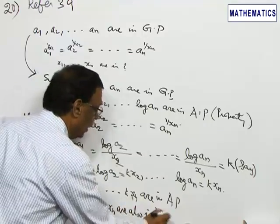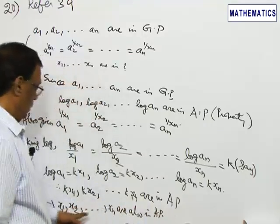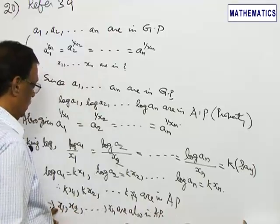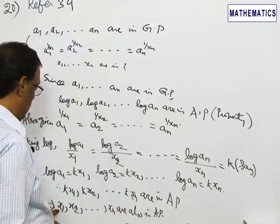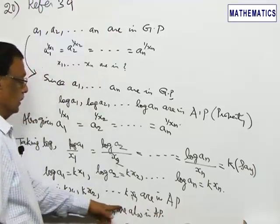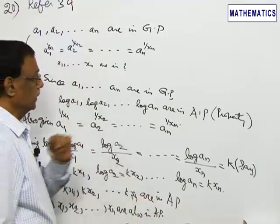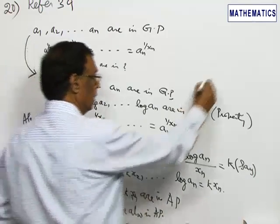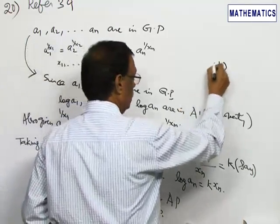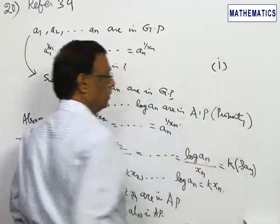This is the answer we required. The required sequence x₁, x₂, ..., xₙ is in AP. So the correct option is 1.